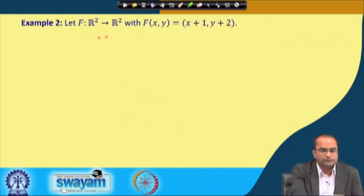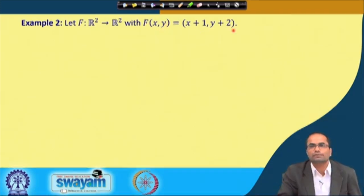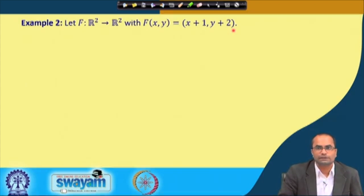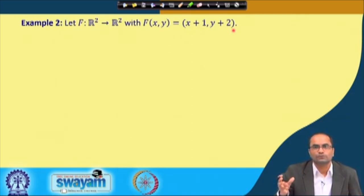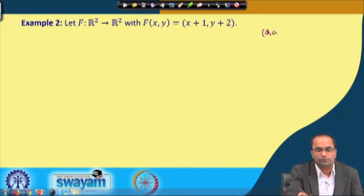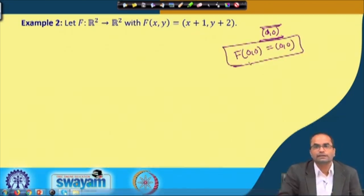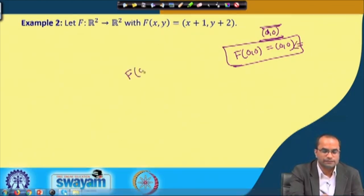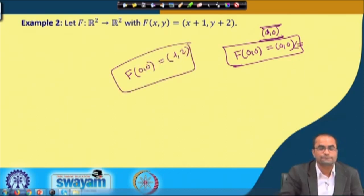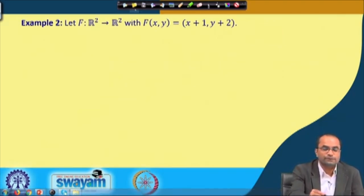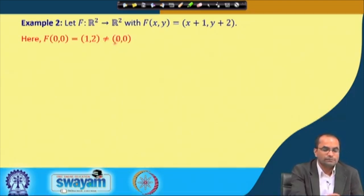Another example: consider the map F(x,y) = (x+1, y+1). The question is whether this is a linear map. One of the properties of a linear map is that it always maps 0 to 0. In R², the zero element is (0,0). So F must map (0,0) to (0,0) if it is linear. But when we apply F on (0,0) we get (1,1), not (0,0). Therefore this cannot be a linear map.